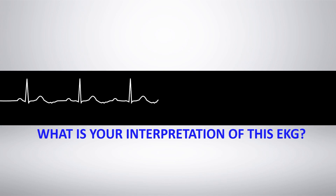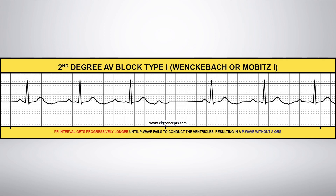What is your interpretation of this EKG rhythm strip? Second-degree AV block type 1, Wenckebach or Mobitz 1.